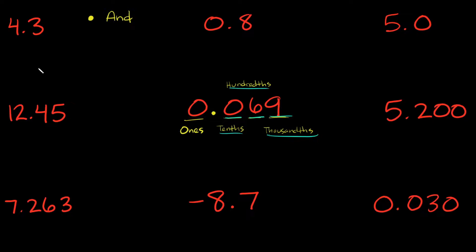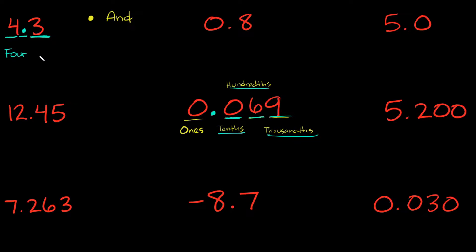Let's start with the first example at the top left: 4.3. The proper way of reading this decimal number would be 'four and three tenths.' Four is just four. Whenever we see a decimal point we say 'and,' and then we have a three. What spot is the three in? Going back to the middle of the screen, the first spot next to the decimal is the tenths spot, so since the three is there we call it three tenths.